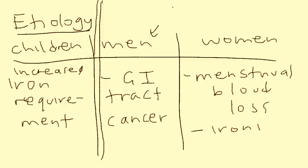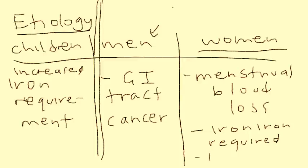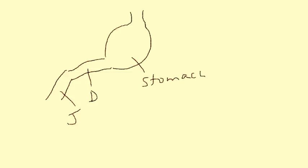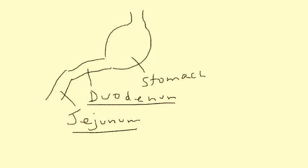Another reason for iron deficiency is malabsorption. Iron is actually absorbed in the duodenum and upper jejunum, so when you have any kind of malabsorption problems — especially in these parts of the small intestine — you can get iron deficiency as well.